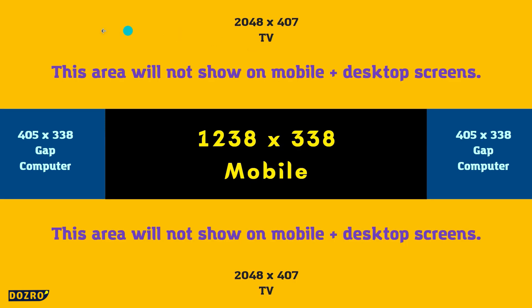The remaining upper and bottom zone will only be displayed on TV screens. It will not display on mobile phones and computer screens.